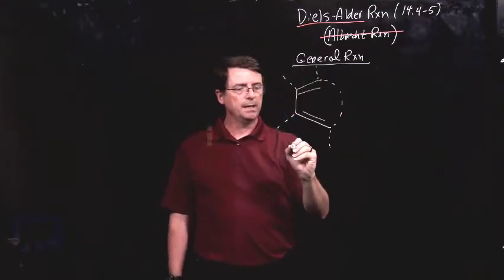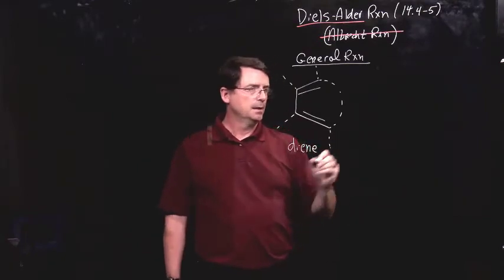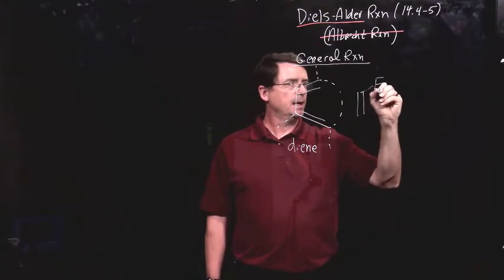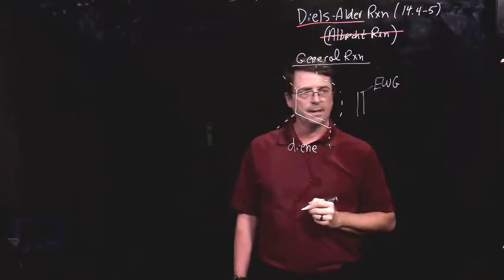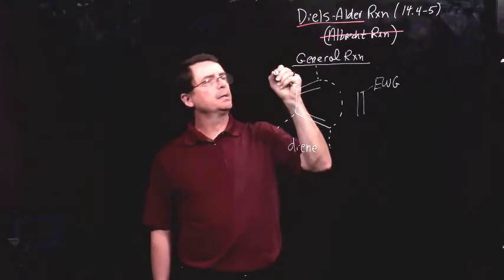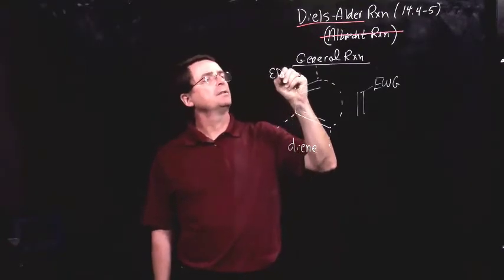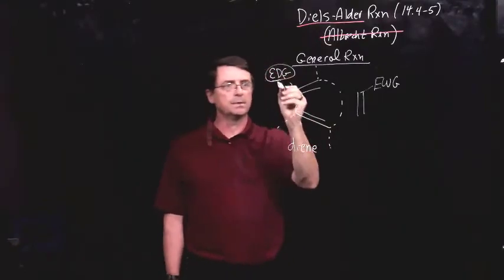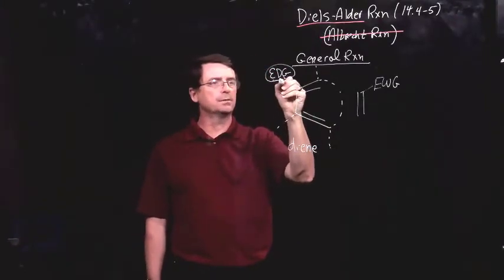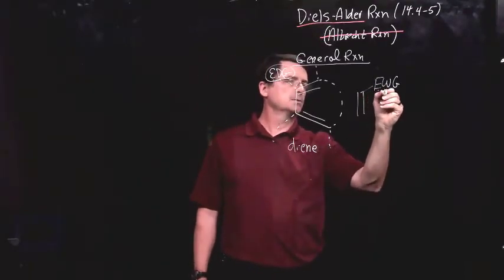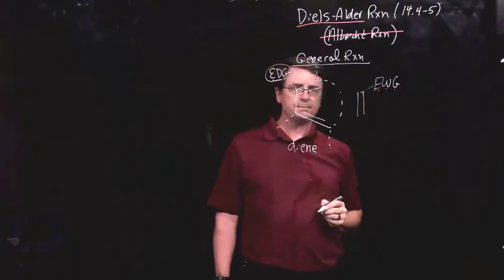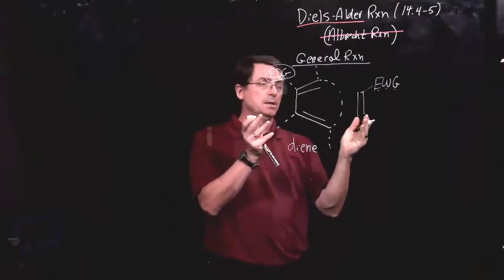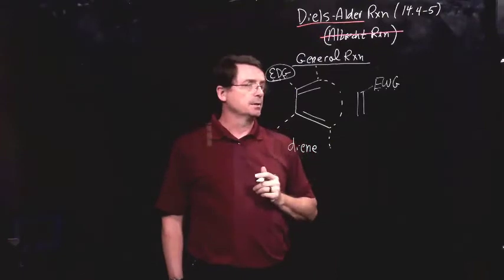But we have a diene, and we have an alkene that typically has an electron-withdrawing group. Now, the diene typically will have, it doesn't have to have lots of them, but it goes much faster if there is an electron-donating group. So, EDG is electron-donating group. EWG is electron-withdrawing group. And so, when you have this plus-minus, if you will, the reaction goes quickly.